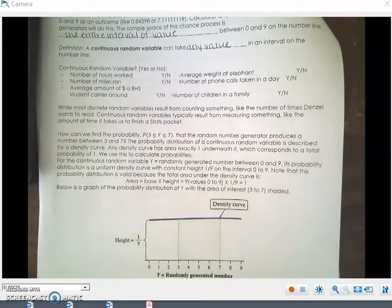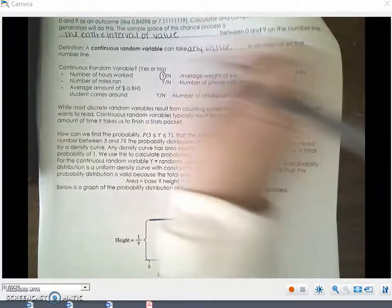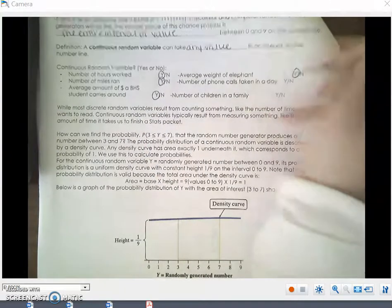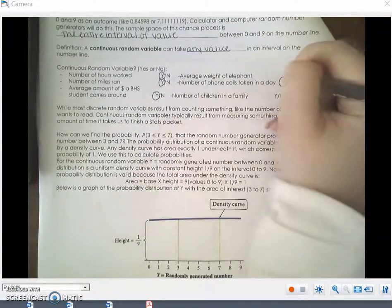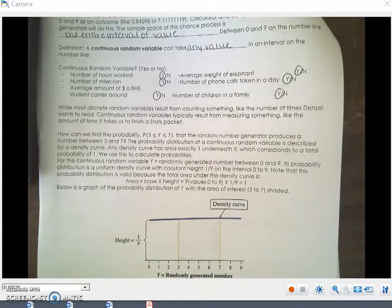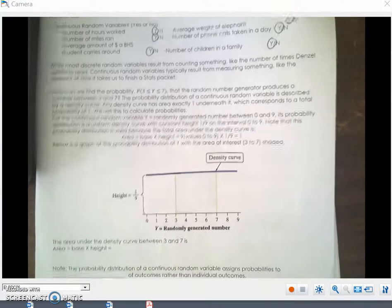Continuous random variables are literally any number. The number of hours worked? Yes. Number of miles ran? Yes. Average amount of money? Yes. Average weight of an elephant? Yes. Number of phone calls taken a day? Yes. Number of children in a family? Yes. All of those are continuous random variables. While most discrete random variables result from counting something, like the number of times Denzel wants to read, continuous random variables typically result from measuring something, like the amount of time it takes us to finish a stats packet.